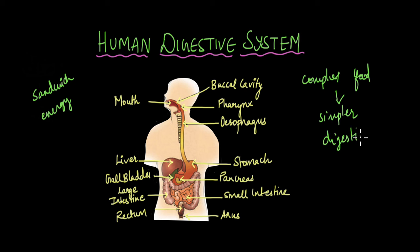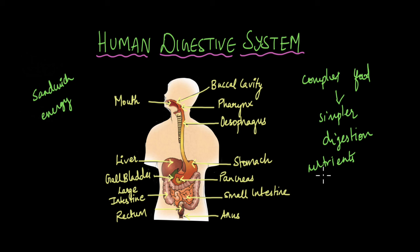And once the food is digested, the simple molecules — now they can also be called nutrients — they are transported to all parts of the body by the blood. And the cells then use up the nutrients to perform various functions like produce energy, build new cells, etc. So, in today's video, we are going to talk about the different parts of the digestive system.